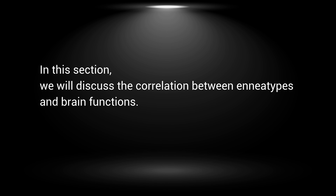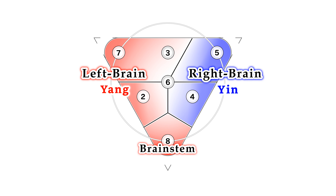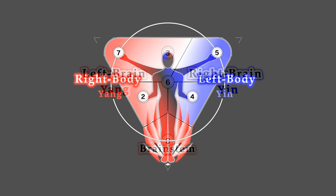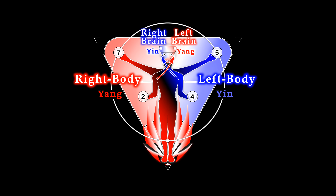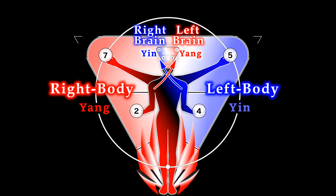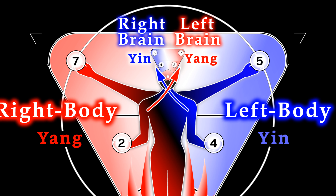Section 7: Brain Functions. In this section, we will discuss the correlation between enneatypes and brain functions. First of all, we will discuss the connection between the brain and the body. The right side of the body represents yang and the left side of the body represents yin. Then, the right side of the body is connected to the left side of the brain, and the left side of the body is connected to the right side of the brain. Because of this crossing structure, when the zeptoform is used to represent a brain, left and right are reversed. For example, point 4 and point 5 are located in the right brain area — the right brain is intuitive, and as discussed in some previous sections, Type 4 and Type 5 are intuitive types.